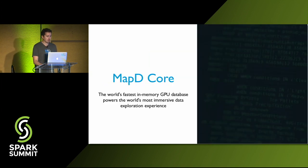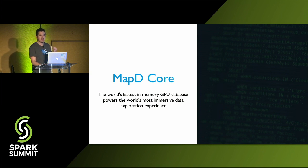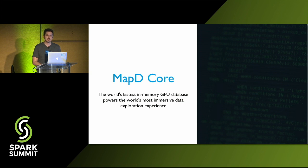A little bit about MapD Core: it's the database engine, and we recently open-sourced it — basically in its entirety. It's gotten a lot of excitement. You can go on GitHub under an Apache license and find it today, download the Community Edition, or pull it on GitHub.